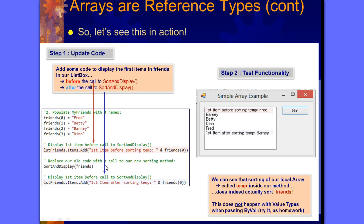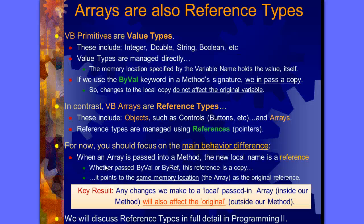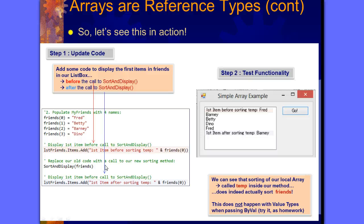Now the question is, did we change the original friends array or not? And the answer is yes, because an array is a reference type. When you pass it into a method, the original will get changed as well. To prove that, let's add first item after sorting and see what friend zero is. Is it still Fred? No, it's not, because it's been sorted in the original. We're only referring to the original here, not using temp. This is friends, not temp.